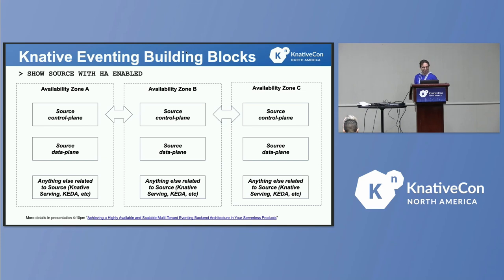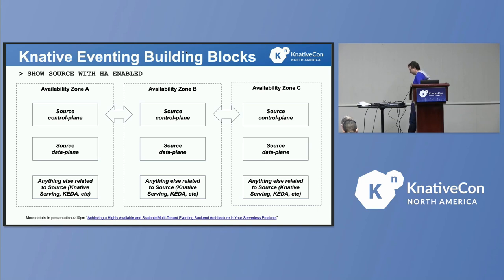One very important thing is high availability. We will not have enough time to talk about it right now, however there is another talk at 4pm which covers high availability. The high-level idea is: the only way to provide high availability is to run multiple copies of your underlying eventing infrastructure. You create different availability zones with Kubernetes and run those pieces of eventing in those different availability zones. We provide everything necessary for Kafka to automatically recover if one availability zone goes down.